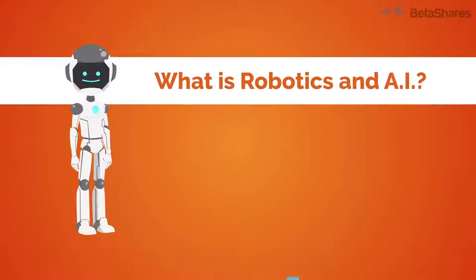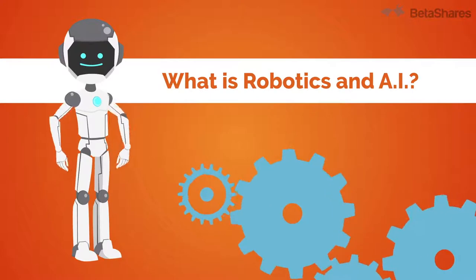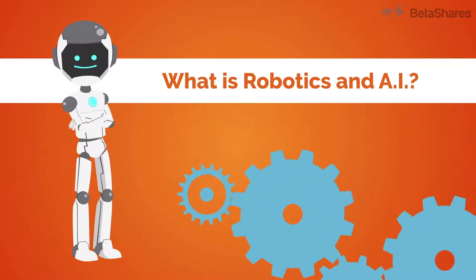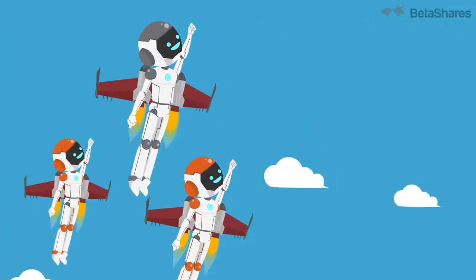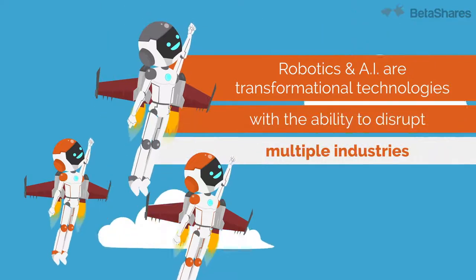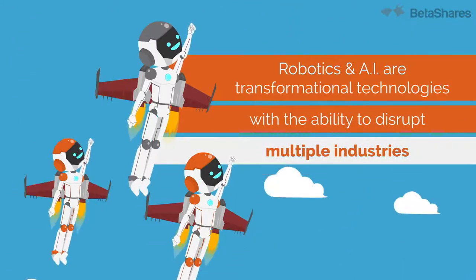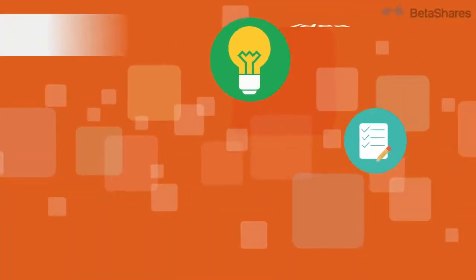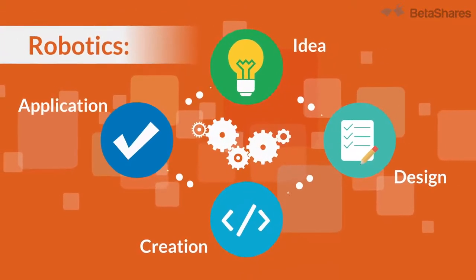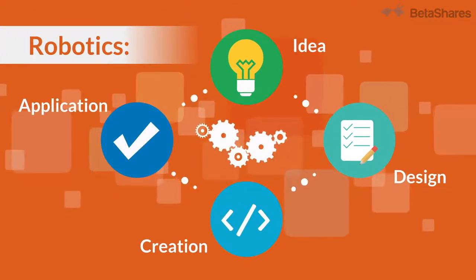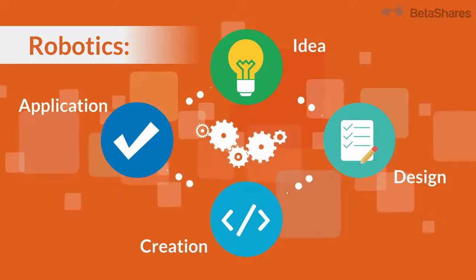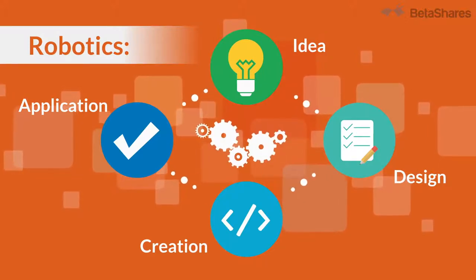What is Robotics and AI? Robotics and Artificial Intelligence are transformational technologies that have the ability to disrupt multiple industries. Robotics involves the idea, design, creation, and application of programmable mechanical devices that can perform tasks and interact with their environments without human input.